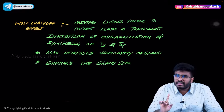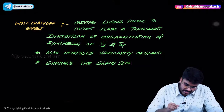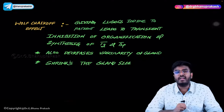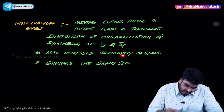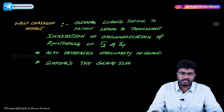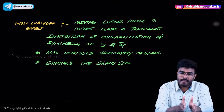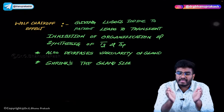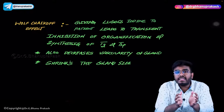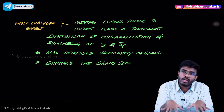Not only does T3/T4 production go down, but also the size of the gland will decrease, and the vascularity of the thyroid gland will also be decreased. The gland becomes less vascular, decreases in size, and T3/T4 hormones inside the thyroid gland also go down.